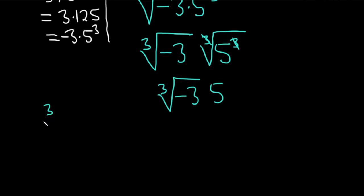The reason is, if you have the cube root of negative 3, that's the same thing as the cube root of negative 1 times the cube root of 3, because negative 3 is the same thing as negative 1 times 3.